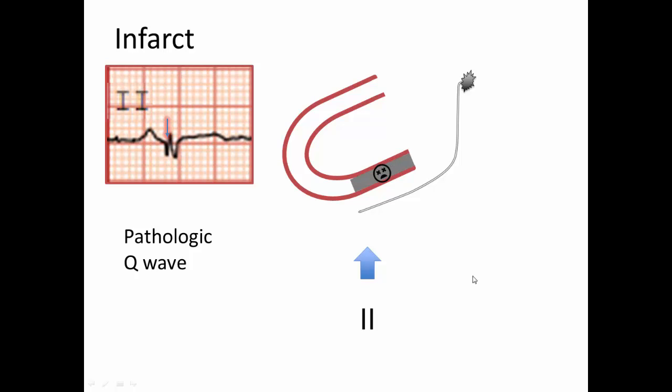A pathologic Q wave is defined as greater than or equal to 0.03 seconds and over 0.1 millivolts deep or QS complexes in leads 1 to AVL or V4 through V6 in any two contiguous leads, or a Q wave in leads V2 to V3 greater than or equal to 0.02 seconds, or QS complexes in leads V2 and V3, or an R wave of greater than or equal to 0.04 seconds in leads V1 to V2, and an RS ratio of greater than or equal to 1 with a concordant W wave in the absence of conduction defects. Infarct is manifest as pathologic Q waves.